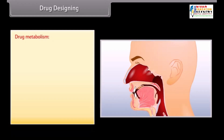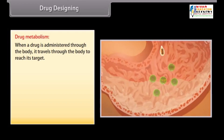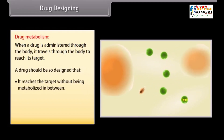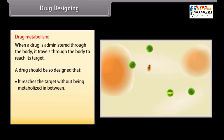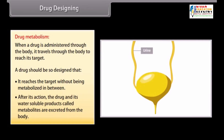Drug metabolism: when a drug is administered through the body, it travels through the body to reach its target. A drug should be designed so that it reaches the target without being metabolized in between. Also, the drug should be designed so that after its action, the drug and its water-soluble products called metabolites are excreted through urine, feces, exhaled air, saliva, and sweat without causing harm to the body.